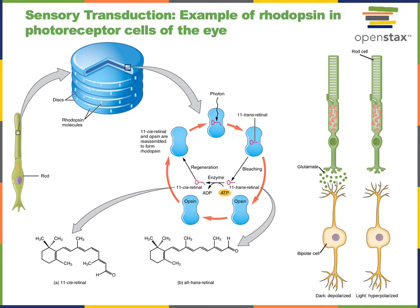Within the rhodopsin protein is a small molecule cofactor known as retinal. When light is absorbed by the retinal molecule within rhodopsin, light will cause a change in the shape of retinal from the cis to the trans isomer. This change in shape causes activation of the rhodopsin protein to stimulate an intracellular signaling mechanism that will ultimately lead to closing of an ion channel.